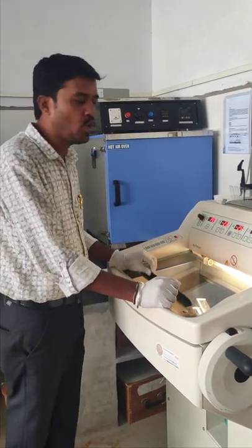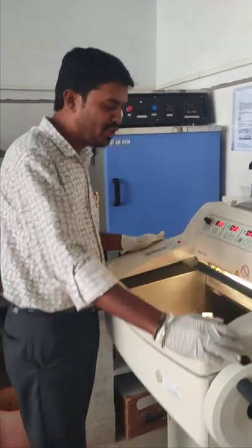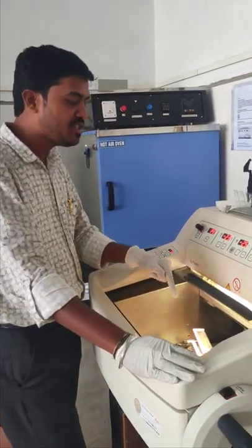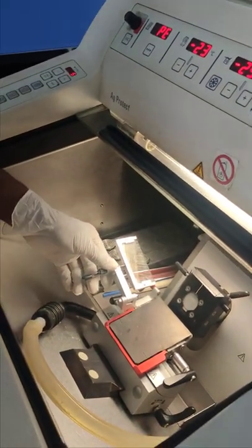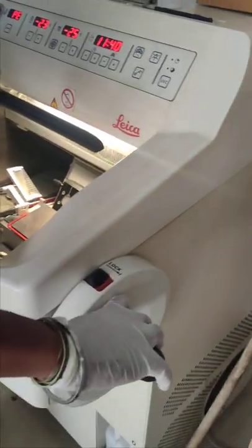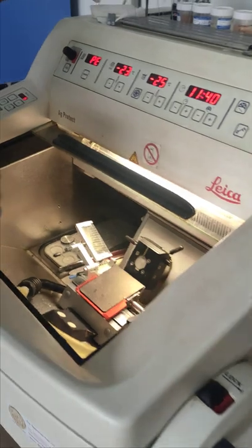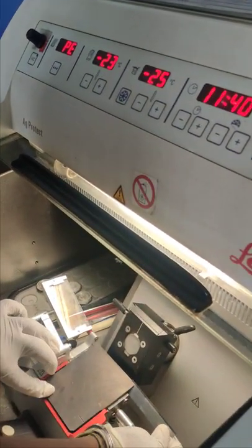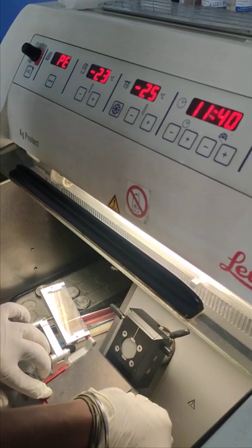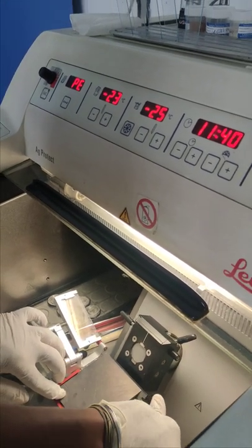We call it a cold microtome because the instrument inside is built with an advanced microtome and the rotatory handle is situated outside. Inside this machine there is a blade holder where we need to insert a disposable blade to cut the block.